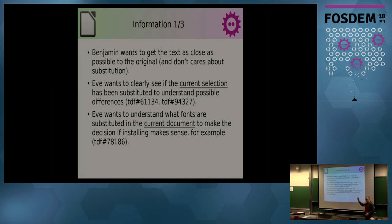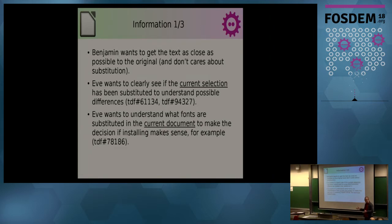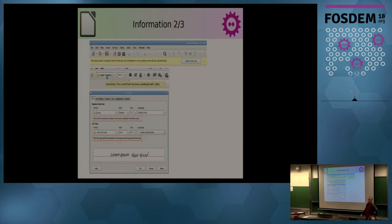I'm putting all the request tickets into user stories, starting with a persona. We have two personas: Benjamin and Eve. Benjamin as a standard user doesn't care about fonts at all — it just has to work, and it does work, somewhat. Eve wants to see what the actual replacement is for the current selection where the cursor is, but she also wants an overview of what fonts are substituted across the whole document.